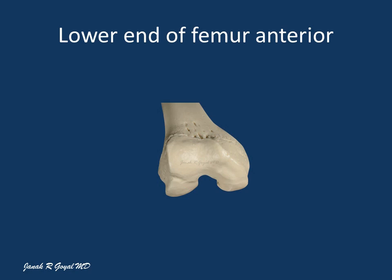The lower end of femur has two large condyles, lateral and medial, which are united anteriorly and separated posteriorly by a deep intercondylar fossa. The articular surface of the condyles is divided into patellar and tibial areas. The patellar articular surface on the lateral condyle projects further forward than that on the medial condyle. The tibial articular surfaces are continuous with the patellar surface anteriorly and divided by the intercondylar fossa posteriorly. Medial and lateral epicondyles are the summits of the medial and lateral condyle of femur.